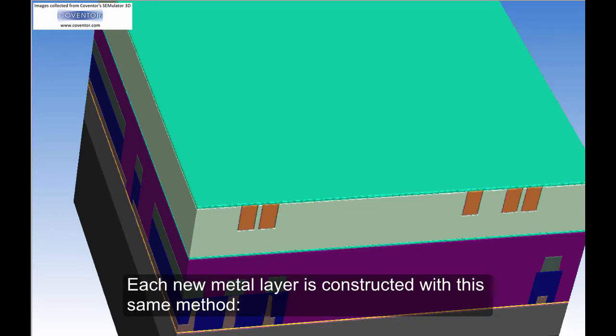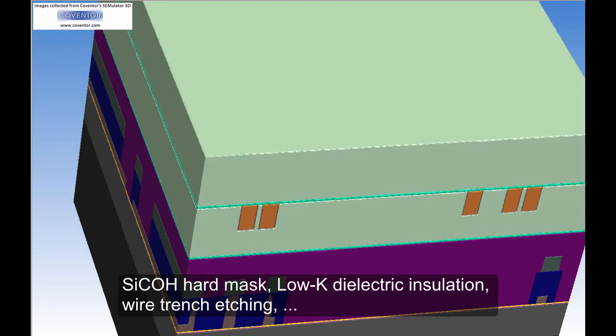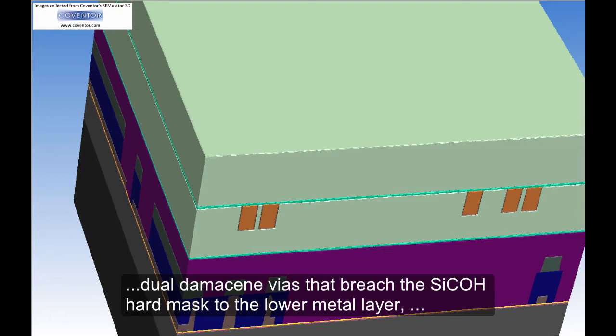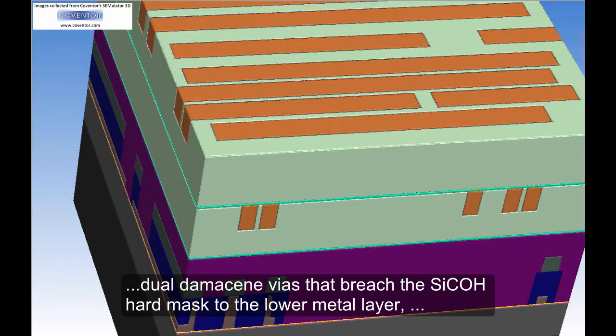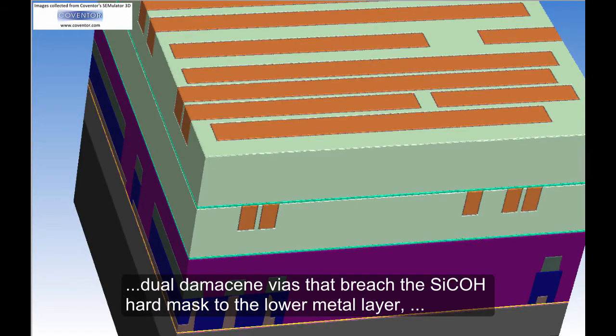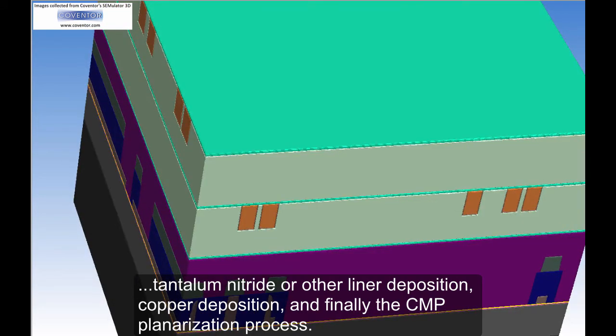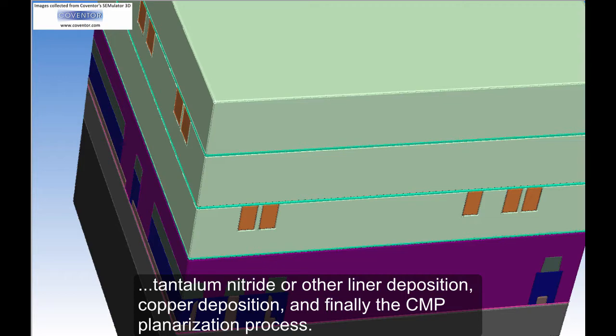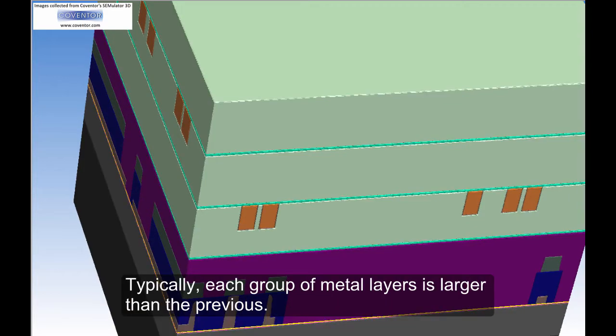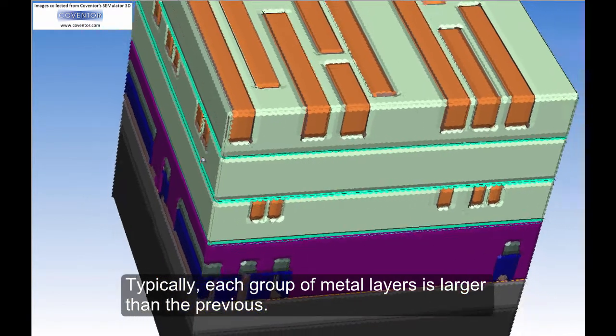Each new metal layer is constructed with this same method: PSYCO hard mask, low-K dielectric insulation, wire trench etching, dual damascene vias that breach the PSYCO hard mask to the lower metal layer, tantalum nitride or other liner deposition, copper deposition, and finally the CMP planarization process. Typically, each group of metal layers is larger than the previous.